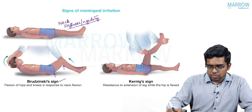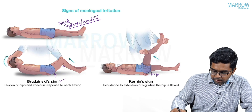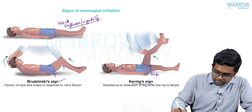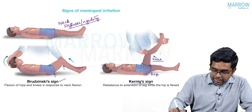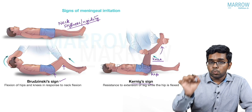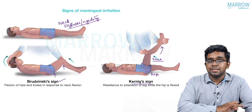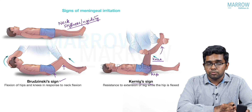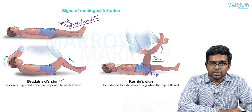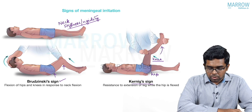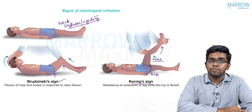The next sign is Kernig's sign. You first flex the hip and knee, then extend the knee passively while keeping the hip flexed. The child will resist that movement because it elicits pain in meningitis. This is Kernig's sign. So neck stiffness, Brudzinski's sign, and Kernig's sign are the three classical signs of meningeal irritation.